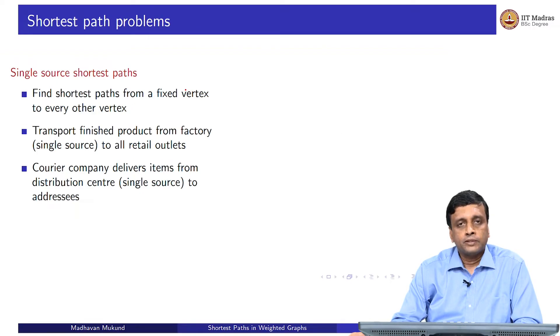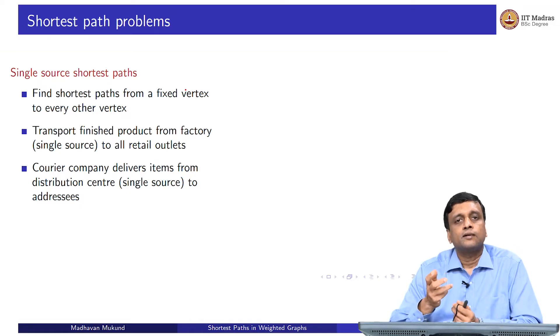There are multiple problems that we will look at. The first problem is one where we are starting from a fixed vertex, which is called the source, and we are looking at the shortest path to every other vertex in the graph. This is called the single source shortest path problem.